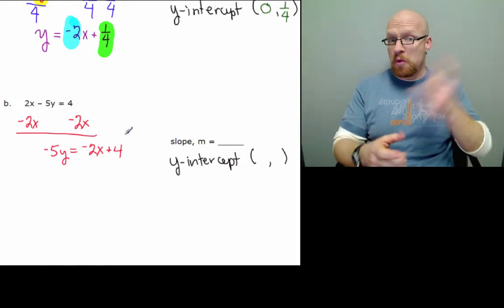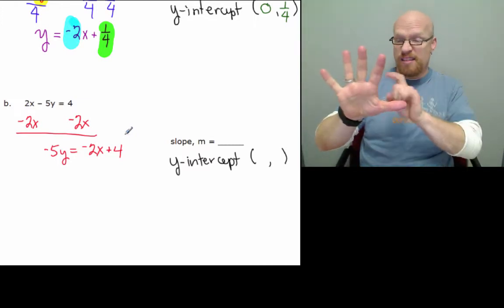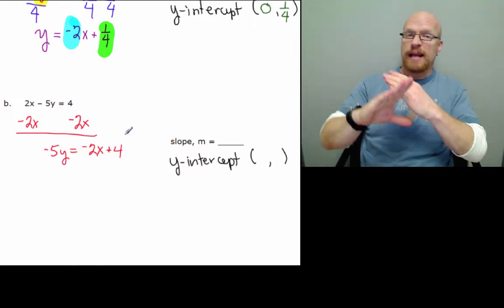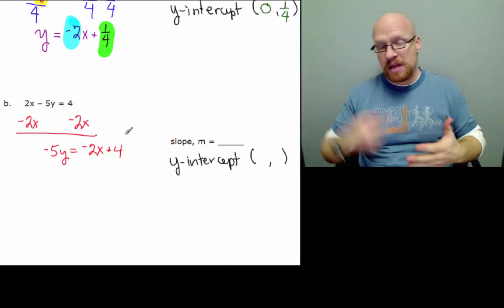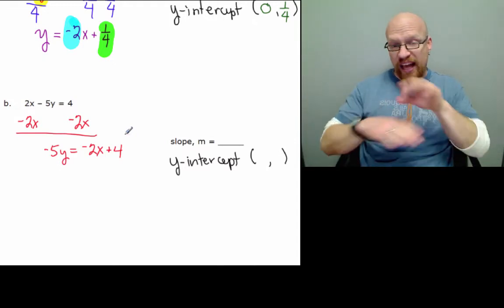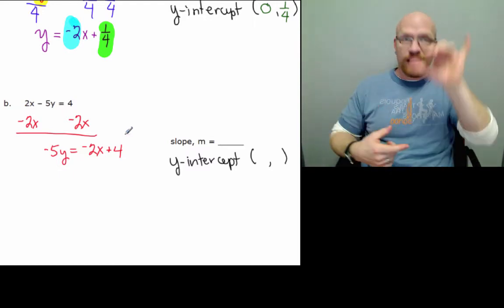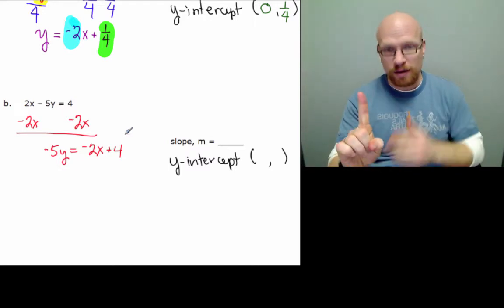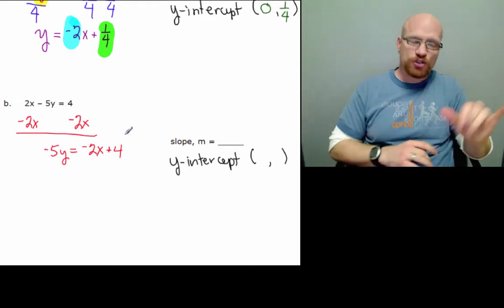Now we're halfway home. Negative 5y, 5 now is blocking me from my goal, isolating y. Negative 5, I want that to become a 1. So, in fraction world, if we do negative 5 divided by negative 5, that becomes 1. And the other terms, we divide by negative 5 also.